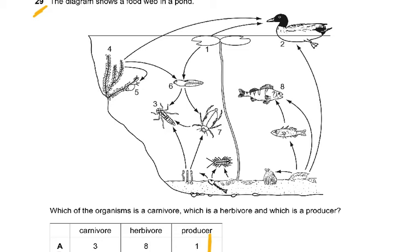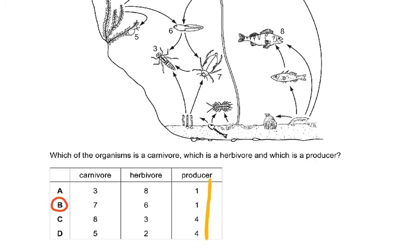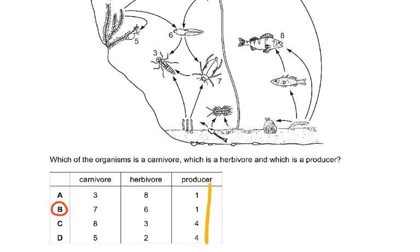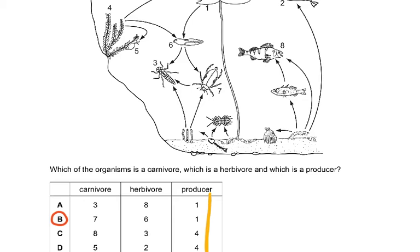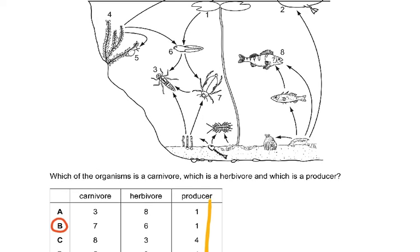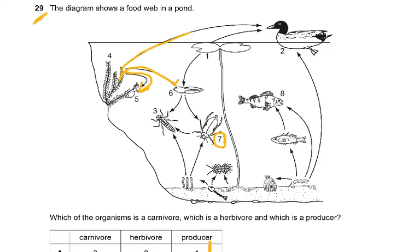Let's look at what is a herbivore. The choices were 8, 6, 3, 2. Are they herbivore or not? And then carnivore are the ones which eat the herbivores. The answer was B, which was 7 was the carnivore. Why? Because it is eating those little snails. And 6 is a herbivore eating this plant. This arrow coming from there is coming to 6. So this plant is being eaten by these, also by 5, that's a herbivore as well, and also by the duck. So the duck is a herbivore eating this plant. 2 is a herbivore as well.